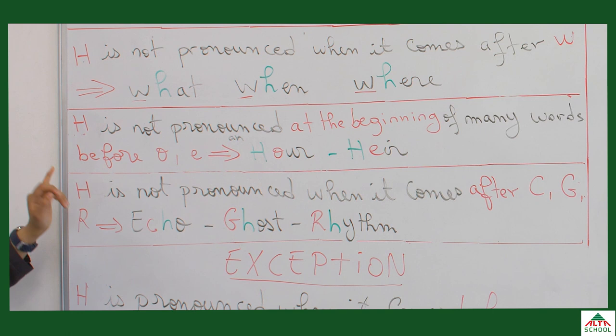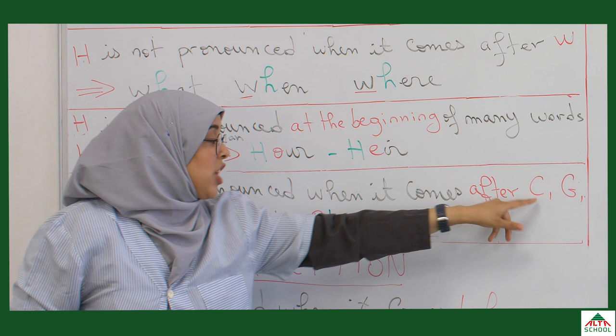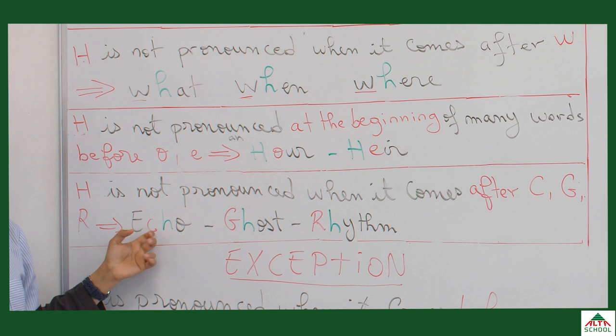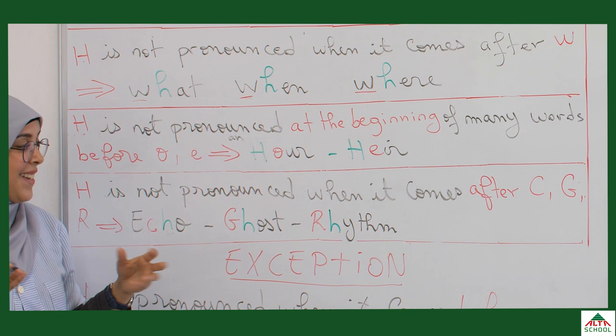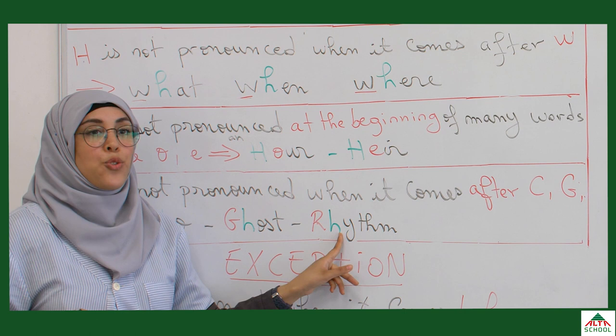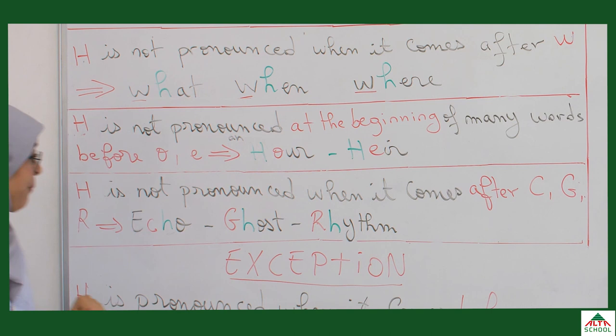The third case is H is not pronounced when it comes after C, J, and R. For example, some students might say 'icho', but here it's 'echo' — because the H comes after C, so it's silent. For 'ghost', the H is not pronounced. And for 'rhythm', the TH here is pronounced as 'rh' — rhythm.